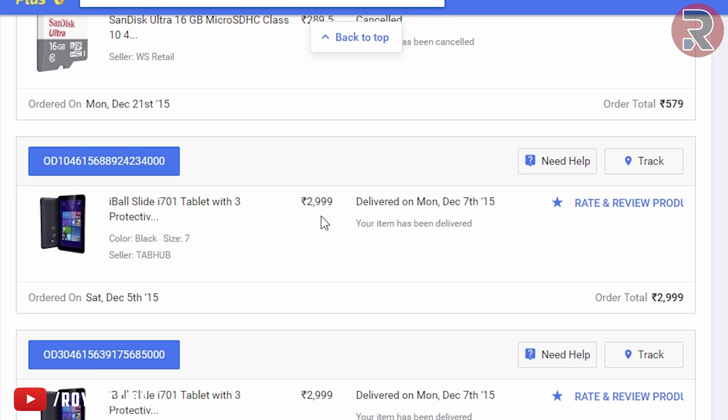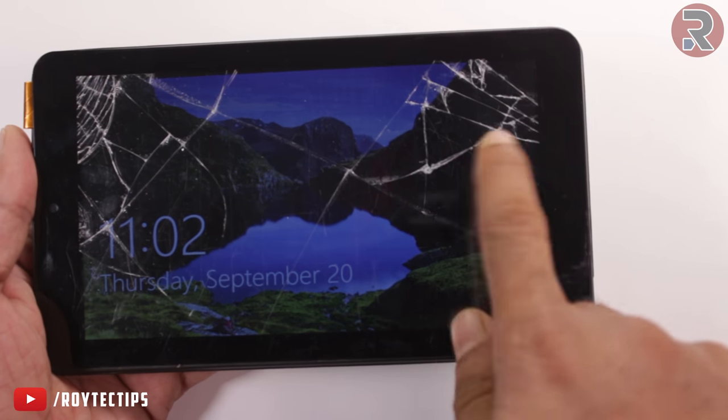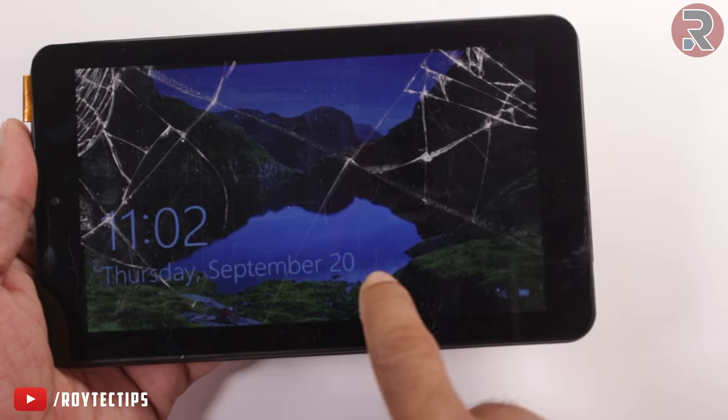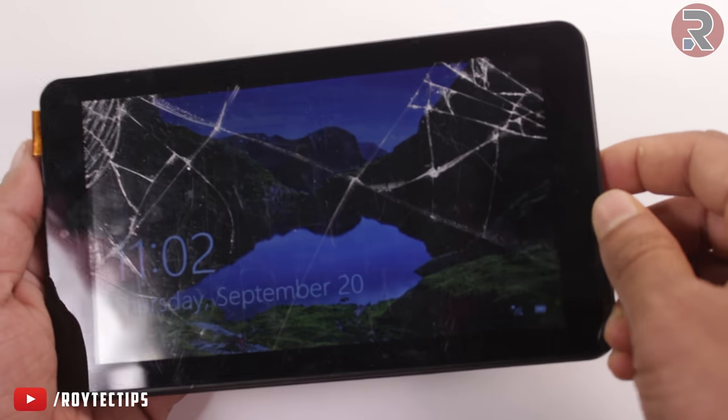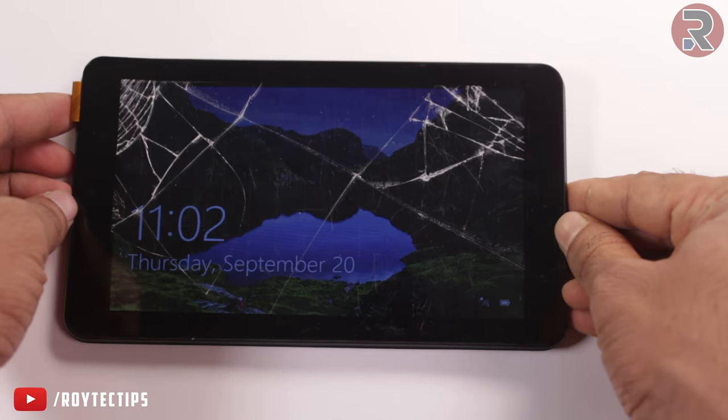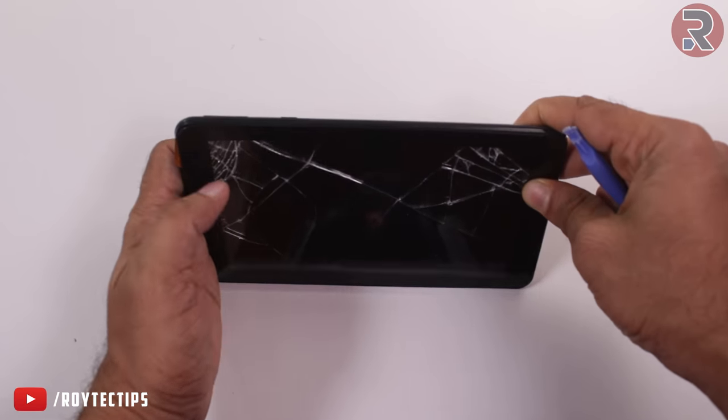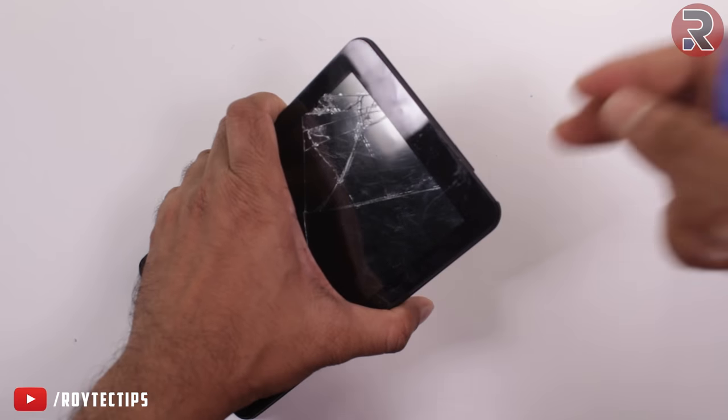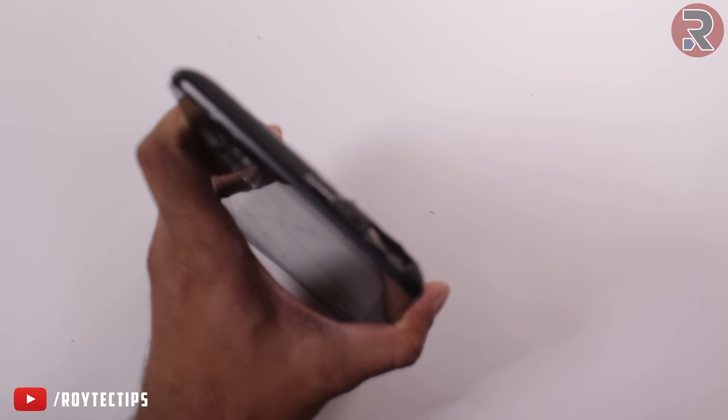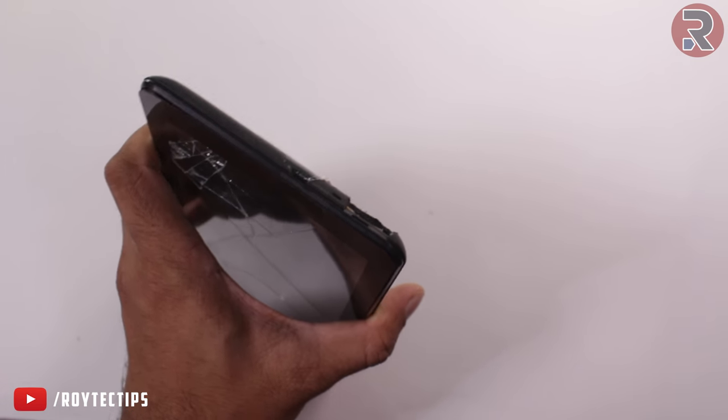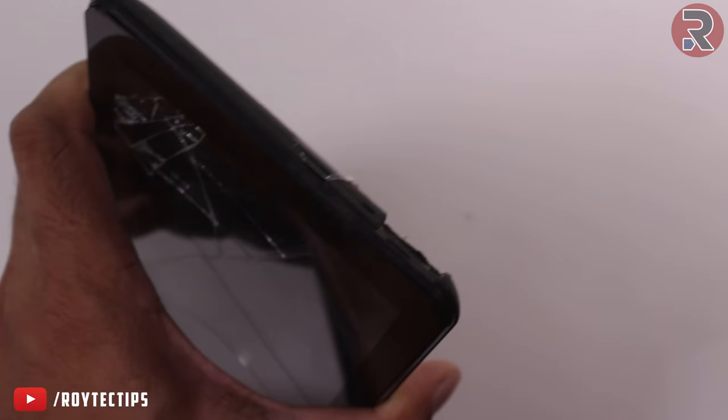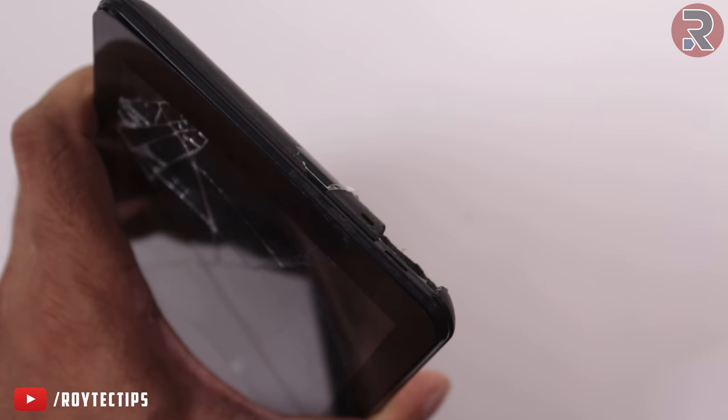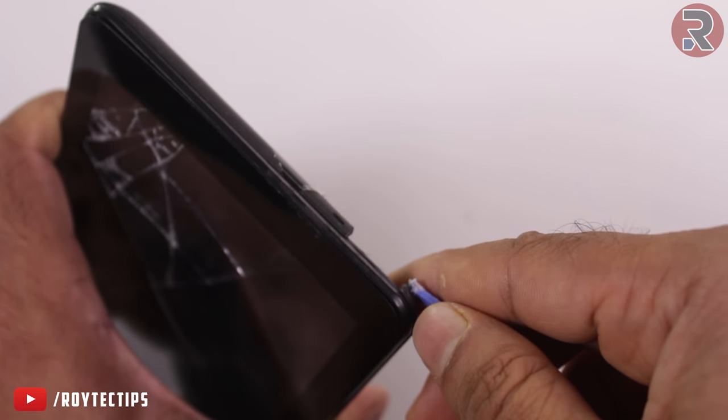A few months back I dropped the tablet from my hand on the floor and it shattered the screen. As you see, the touchscreen is not working right now. In this video I'll show you guys how you can fix any tablet broken LCD screen or broken front panel or broken touch that's not working, this kind of problem at your home with some tips and tricks.